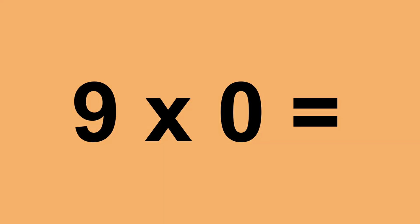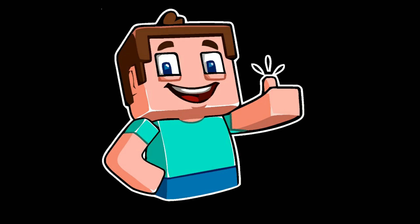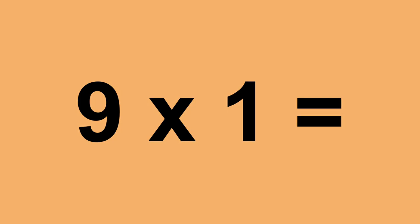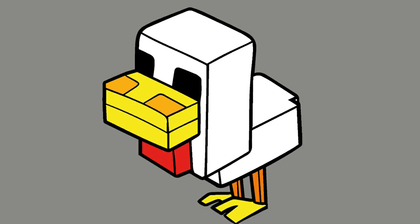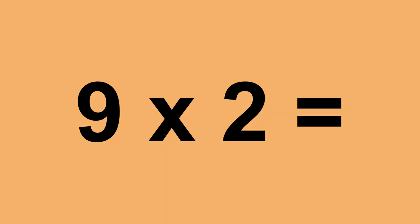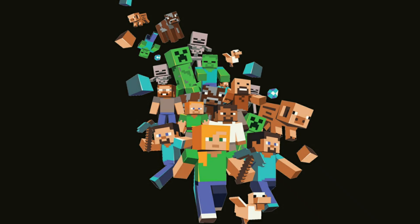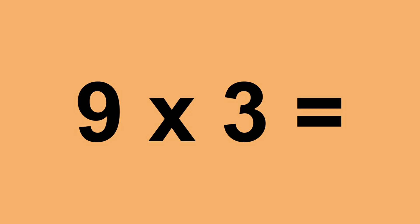9 times 0 equals 0. 9 times 1 equals 9. 9 times 2 equals 18. 9 times 3 equals 27.